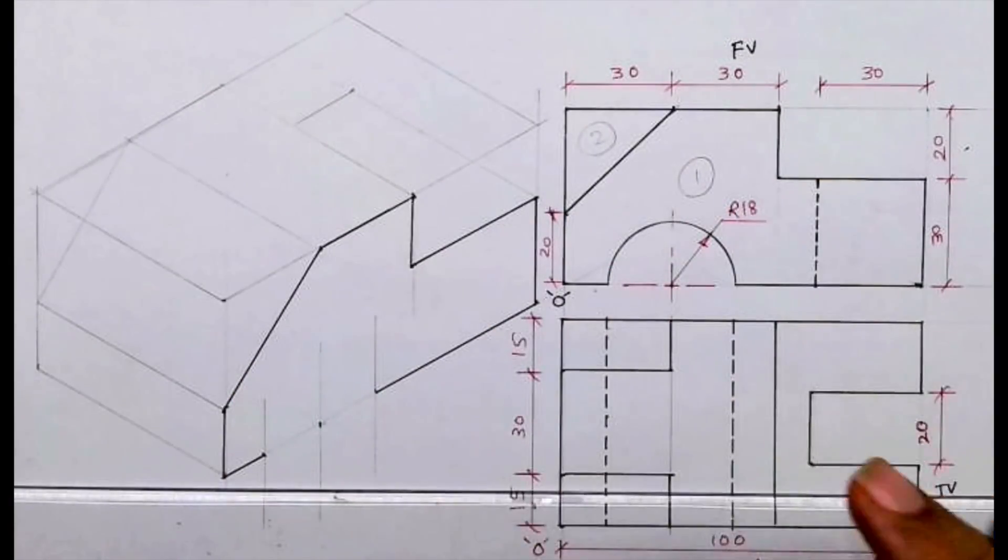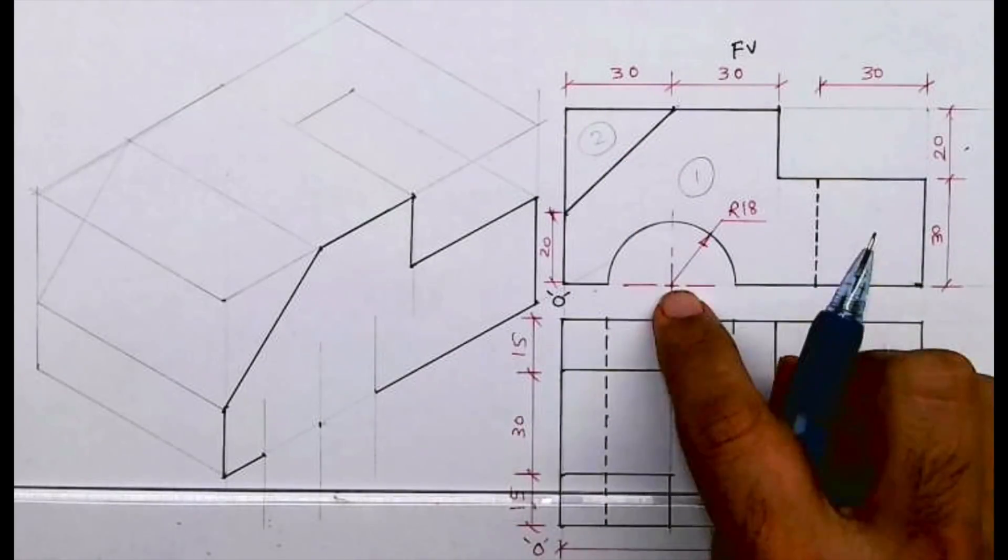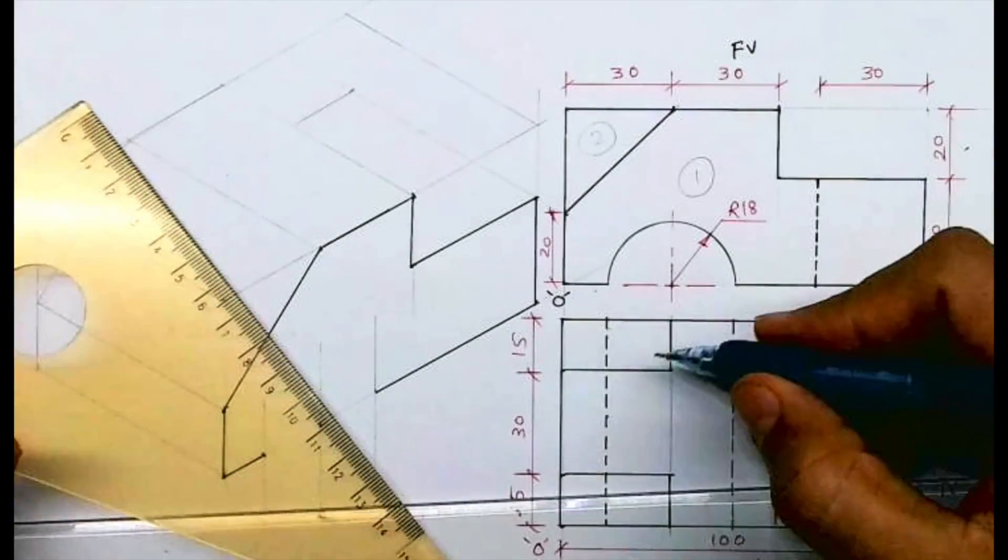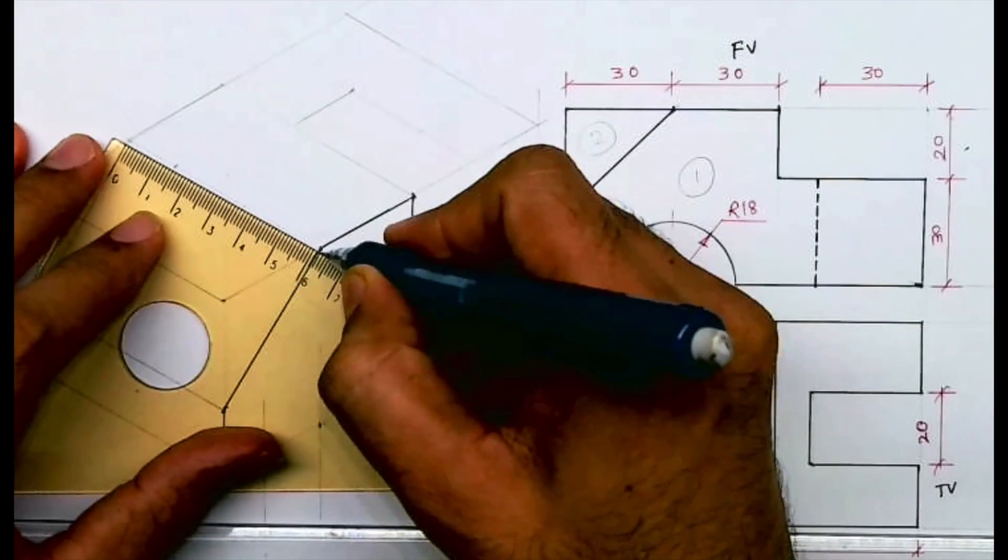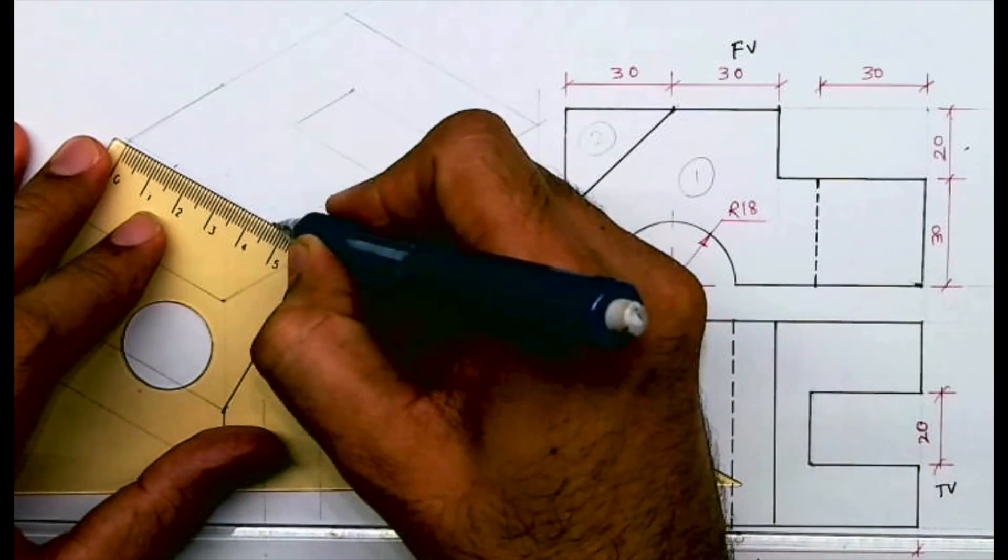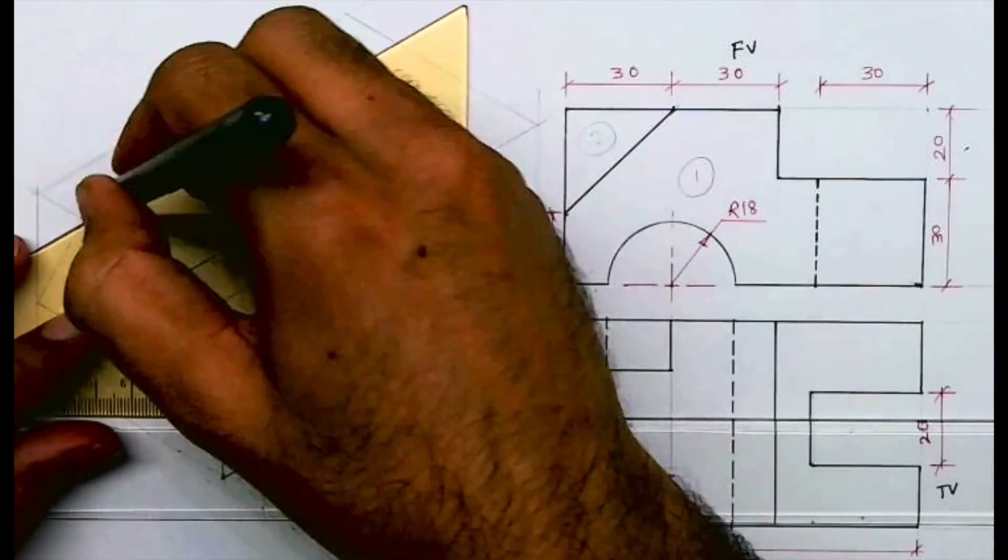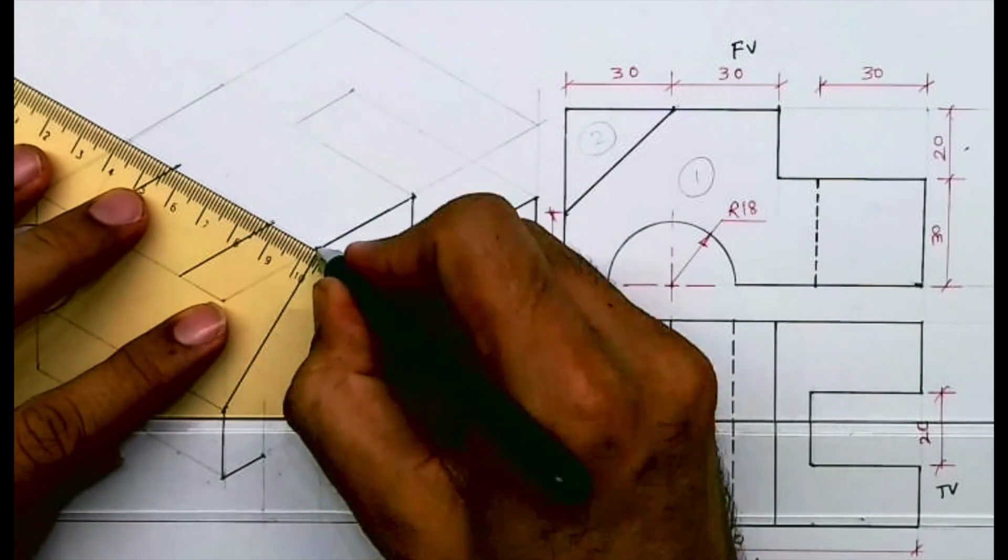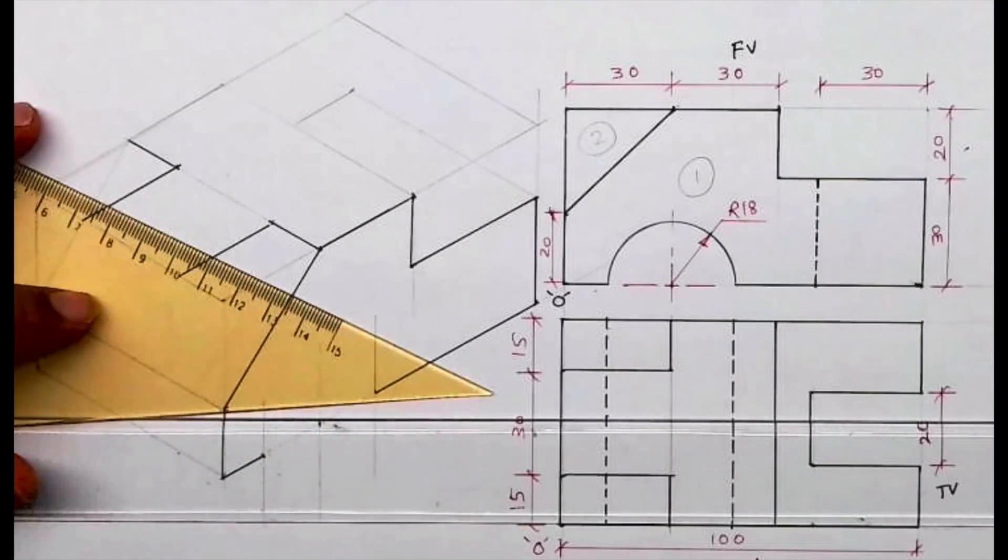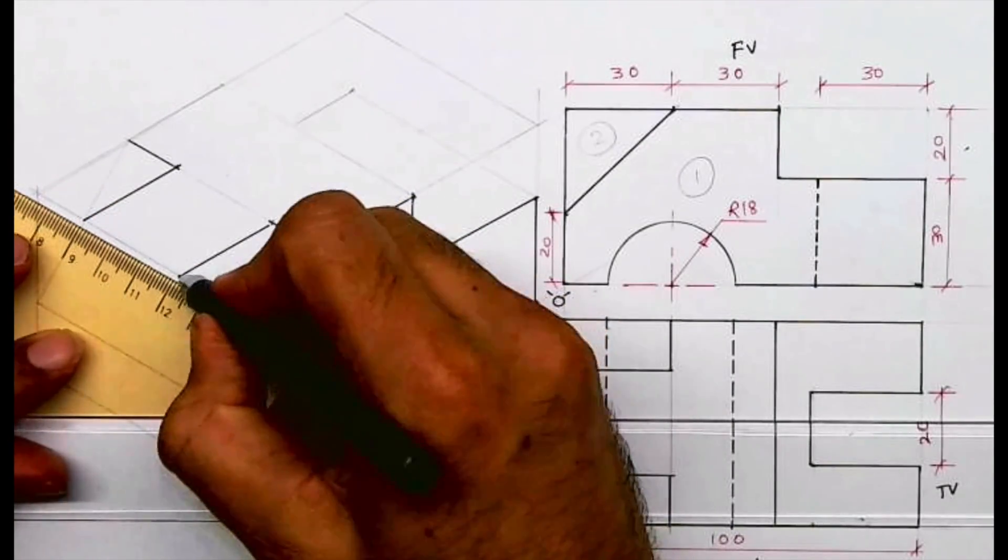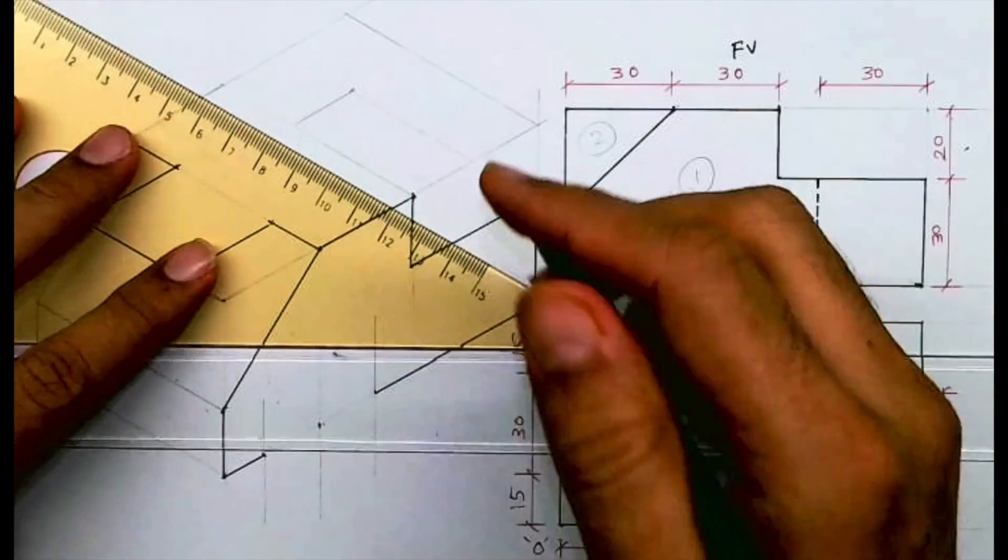This way we'll have this part. Now we need to draw the circle over here. Before that, we'll try part two - the T part. So we know this is 15. From here also we'll take 15, and we'll draw like this. So the T part is done.